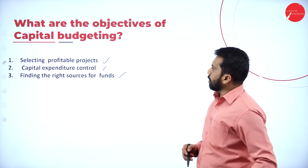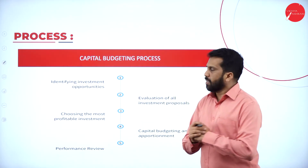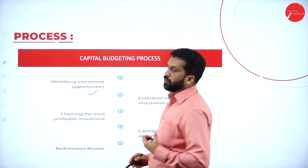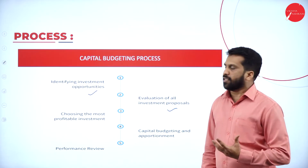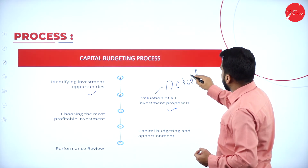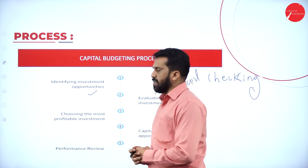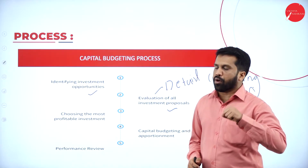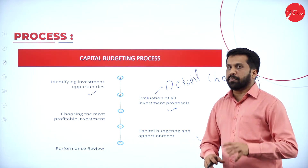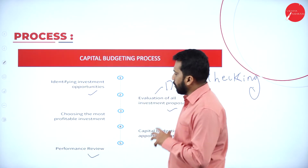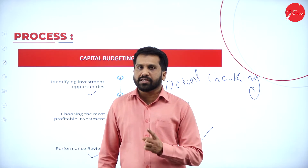There are five processes in capital budgeting. First, identifying investment opportunities. Second, evaluation of all investment proposals — meaning detailed checking of each option. Third, choosing the most profitable investment from the four or five options available. Fourth, capital budgeting and apportionment. Fifth, performance review — once you have selected, evaluated, and invested, you review whether your decision was good or bad.